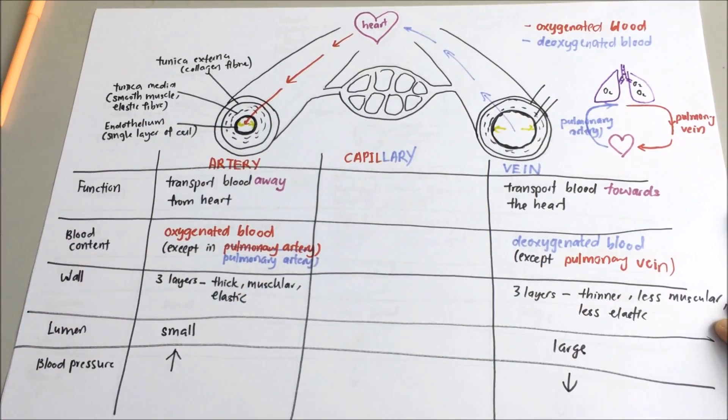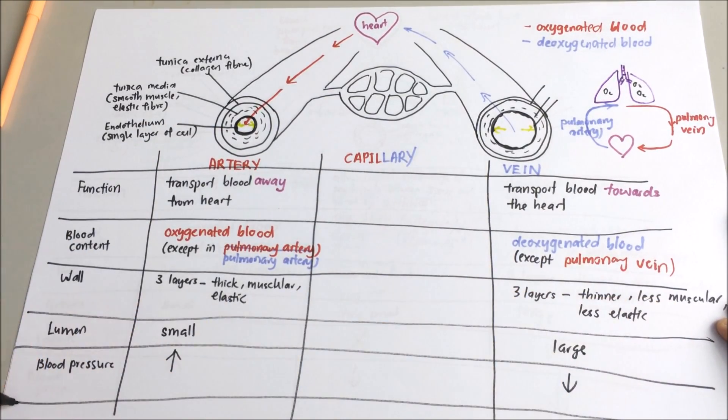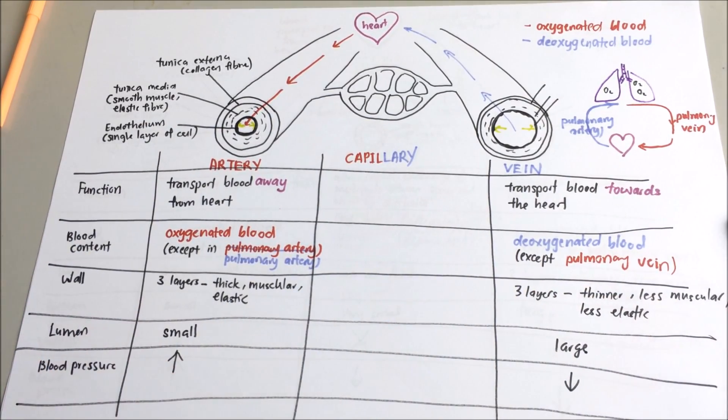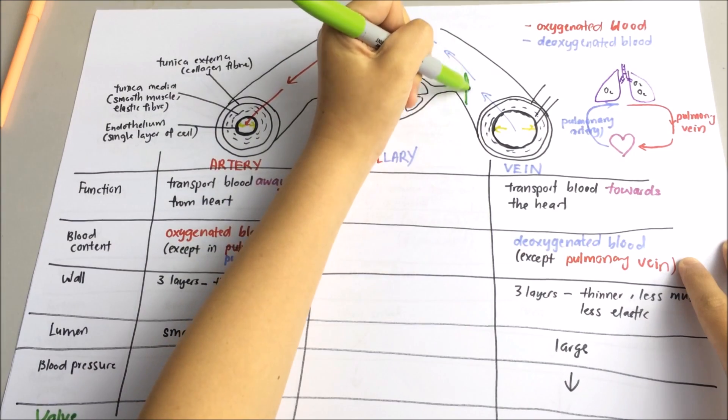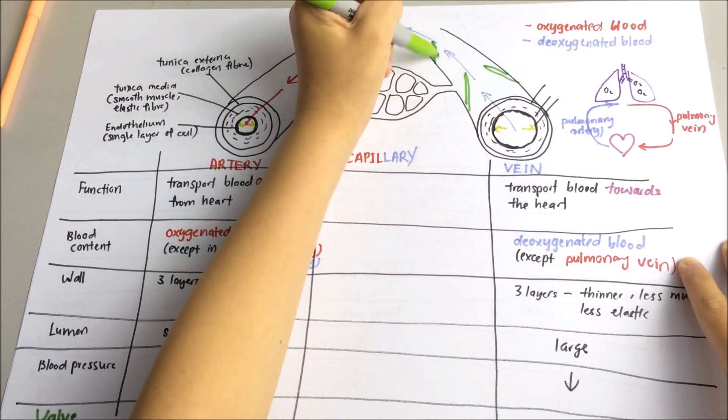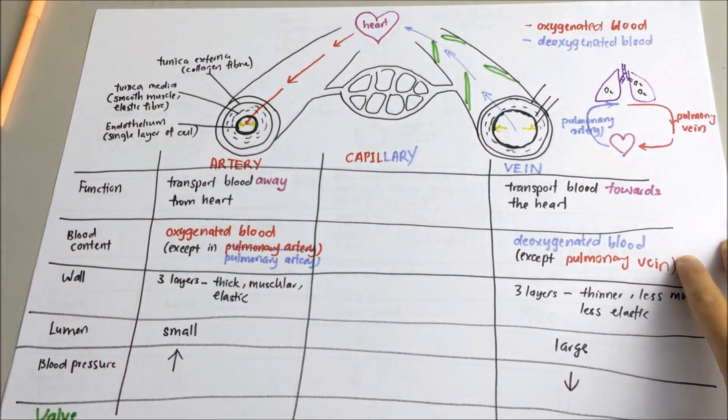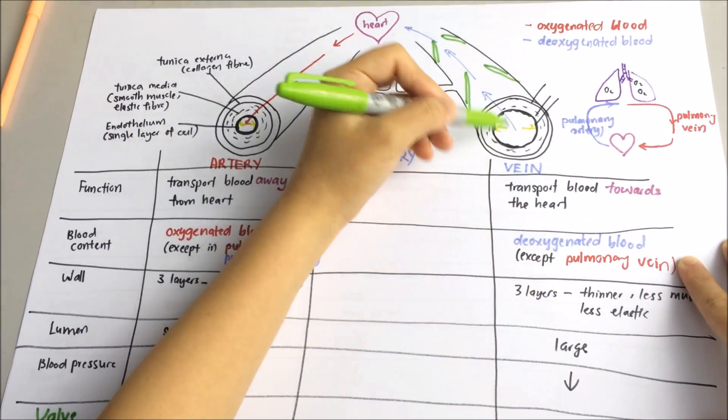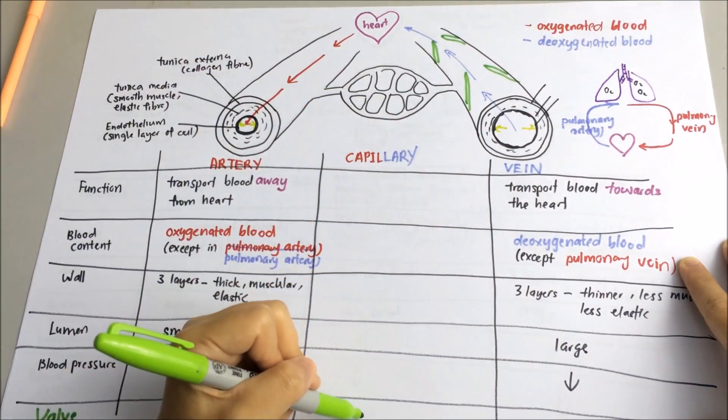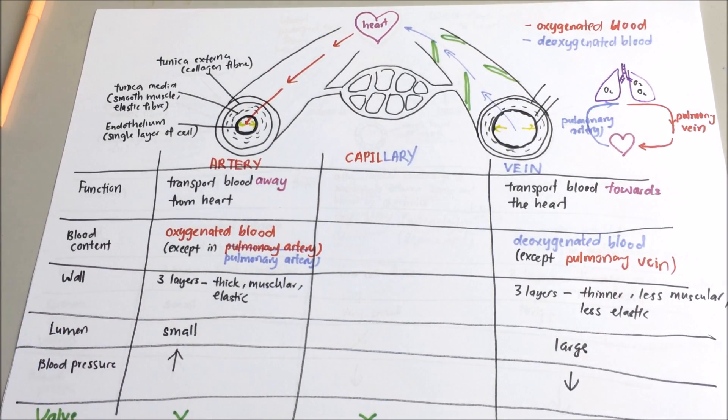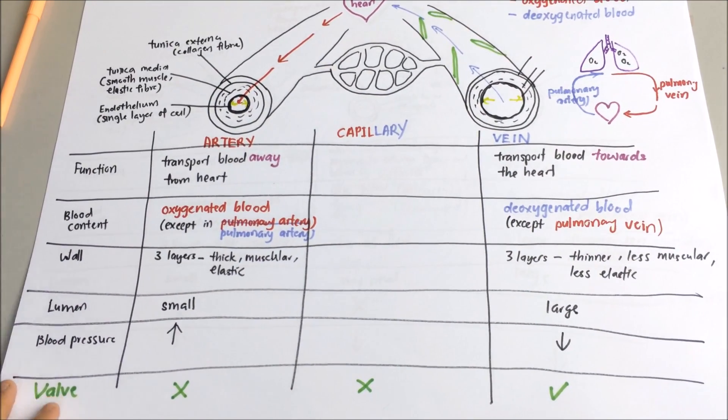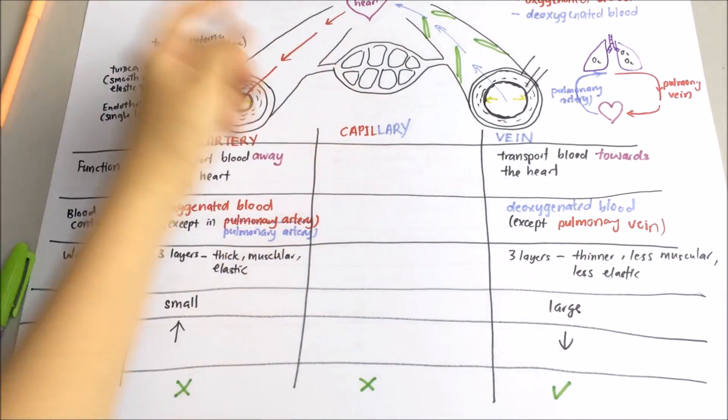If you compare the blood pressure, artery will be higher than the vein. One key feature of the vein is that vein has one-way valves in them to keep the blood flowing in one direction, which is towards the heart. This is because blood in the veins is under much lower pressure, so it has a risk of backflow.